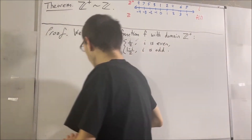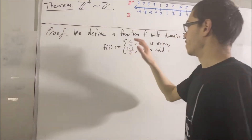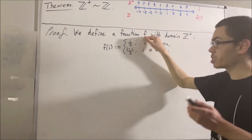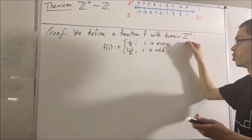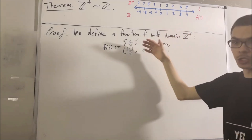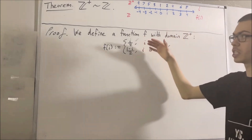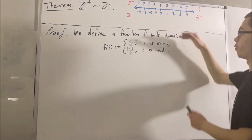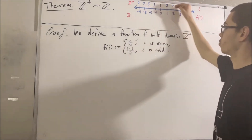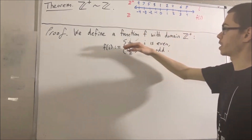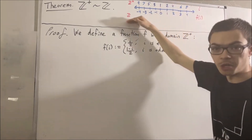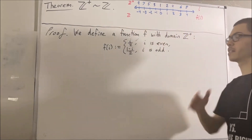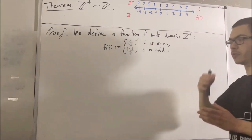But now we want to prove that this function f is a function from the positive integers to the integers. Our claim is that for each positive integer we send into the function f, the output is an integer. We first need to prove that, so let's do that.